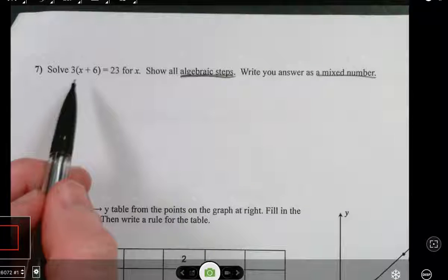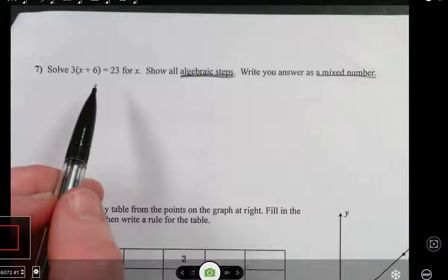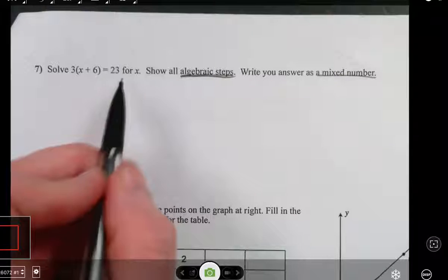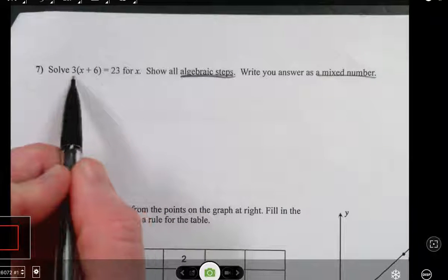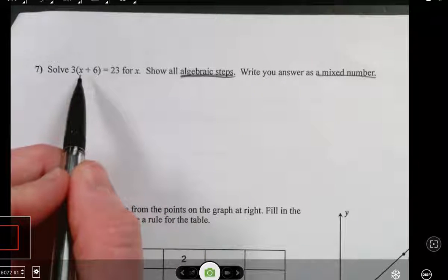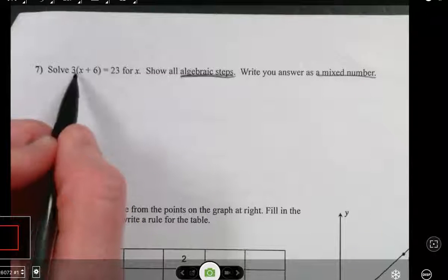First thing we need to do when we have a problem like this is we need to simplify each side of the equation. You can't simplify 23, it's simplified. But over here we need to either combine like terms or eliminate parentheses, so I need to distribute this 3.